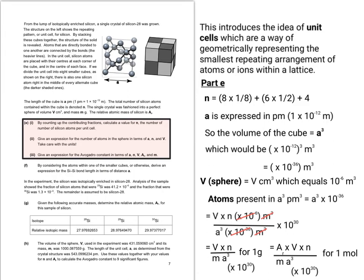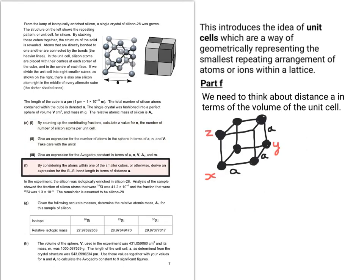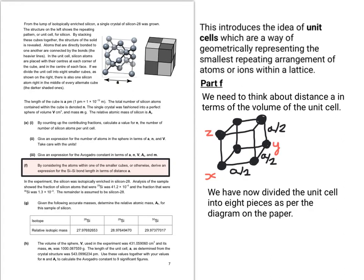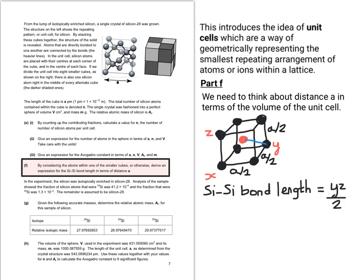Now we can move on to part F. It tells us to consider the atoms within one of the smaller cubes, or otherwise. If we look at the corners x, y, and z. But if we divide the unit cell into eight pieces as per the diagram on the paper, so one of the small squares, we can call each side a over two. And there's a red atom sitting in the middle of this smaller cube. So now we can start thinking what the silicon-silicon bond length would be. It's going to be y, z for two.